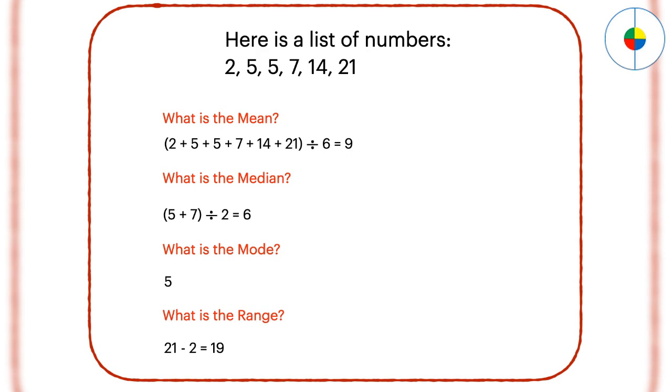Median: the middle number of a data set when all of the items are written in order, from least to greatest. If there are two numbers in the middle, just calculate the mean of the two numbers.